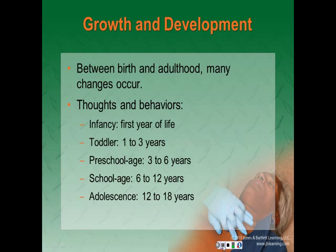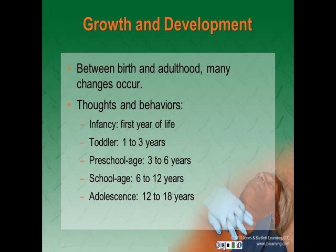There is no specific age at which childhood ends. Between birth and adulthood, many physical and emotional changes occur. The thoughts and behaviors of children are often grouped into stages: infancy is the first year of life, the toddler age is from one to three years, the preschool-aged child is from three to six years, the school-aged child is six to twelve years, and adolescents generally range from twelve to eighteen years.